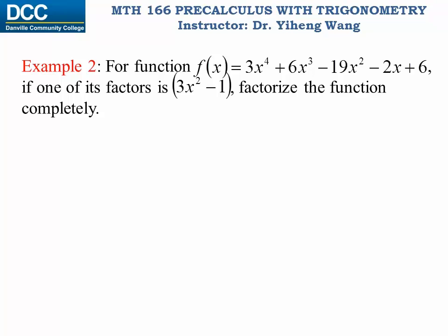Let's look at another example. For this fourth degree polynomial function, if one of its factors is 3x squared minus one, we need to factorize this function completely. Similarly we're going to use long division. However, notice here that this given factor is not a linear factor — it is a quadratic factor. Therefore, when we set up this division, the divisor cannot be written as 3x squared minus one; it needs to be 3x squared plus 0x minus one. It is very important that when you write the dividend and the divisor, your terms have to be in strict descending power order, and you have to fill in any missing term with a coefficient of zero.